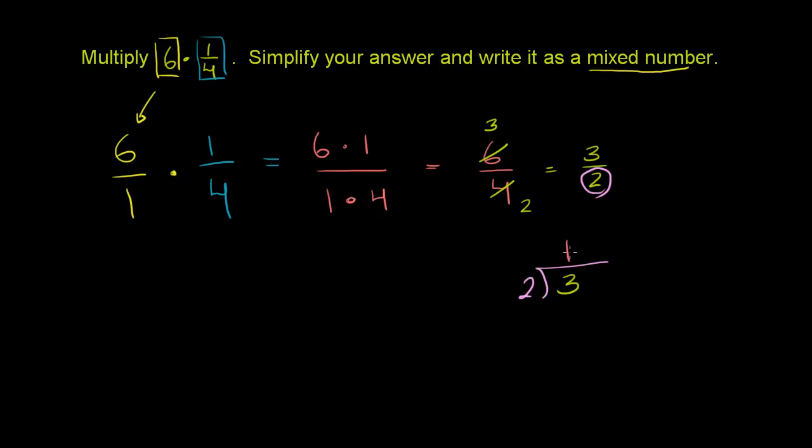1 times 2 is 2. You subtract. You have a remainder of 1. So this will become 1 whole and 1 over 2 left over. So this is 1 and 1/2. So that's how I write an answer. We've just simplified the answer and wrote it as a mixed number.